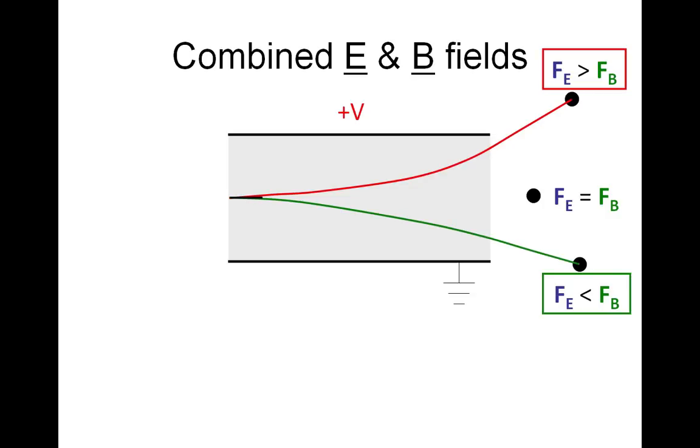Here are the paths being traced out. Equal forces give us an undeflected path. If the electric force is greater than the magnetic force, the particle will move upwards.